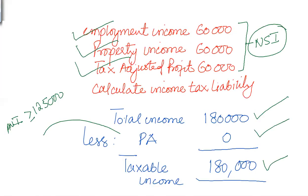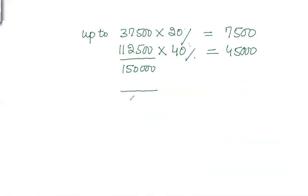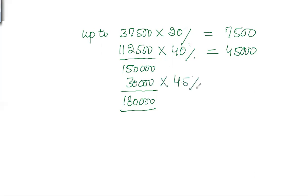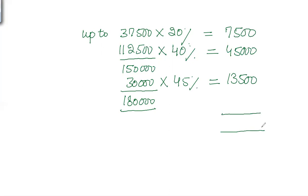The total income of £180,000 means a portion falls in the third band — that is £30,000. The additional rate is 45%, so £30,000 × 0.45 = £13,500, and the total tax liability is calculated from all three bands.